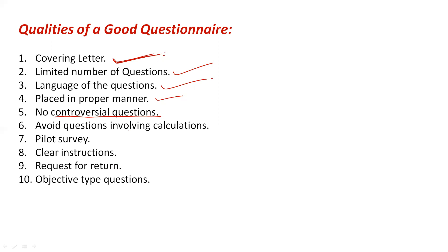The fifth quality is that it should not involve controversial questions — any questions showing favoritism that can create a problem for the respondent. For example, questions like 'who is your favorite politician?' or 'what is your view on a particular topic?' should not be included, as they directly show favoritism and could create controversies or problems for the respondent.